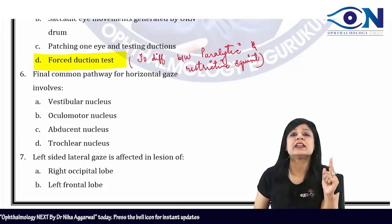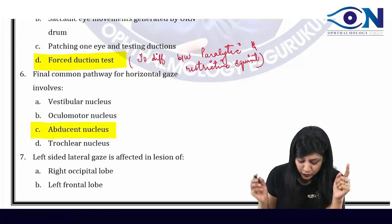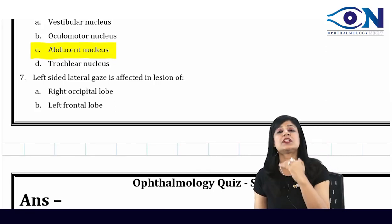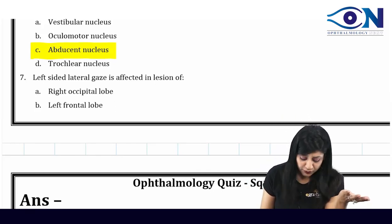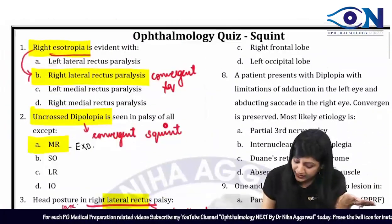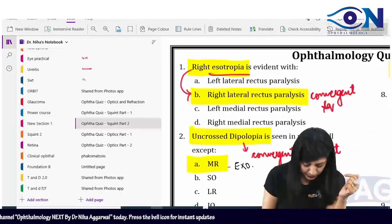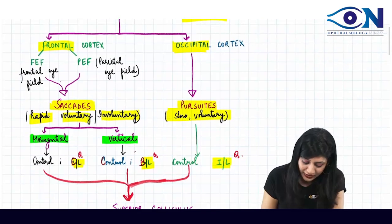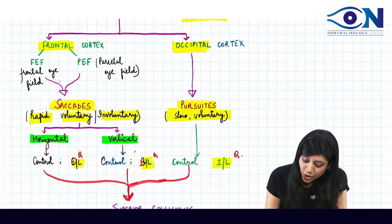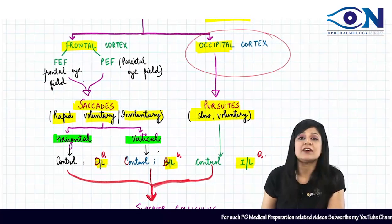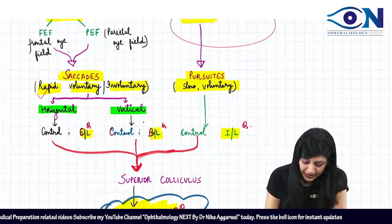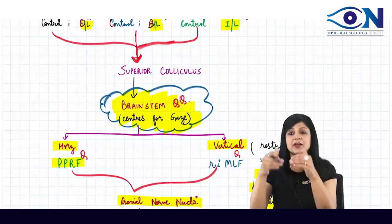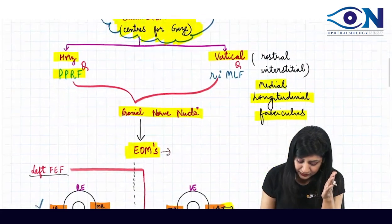Next question: the final common pathway for horizontal gaze. For horizontal gaze, it is actually the sixth nerve nucleus, at which we have the parapontine reticular formation. Then we have the left-sided lateral gaze, which is affected by the lesion of the other side — so it is actually controlled by the contralateral frontal field. The occipital cortex is responsible for slow and voluntary movements, while the frontal cortex is involved in rapid as well as voluntary movements. From the superior colliculus, it goes to the brainstem where we have the centers for gaze.